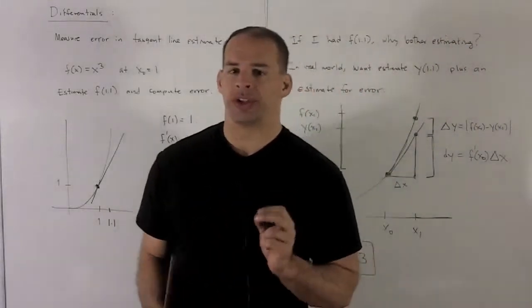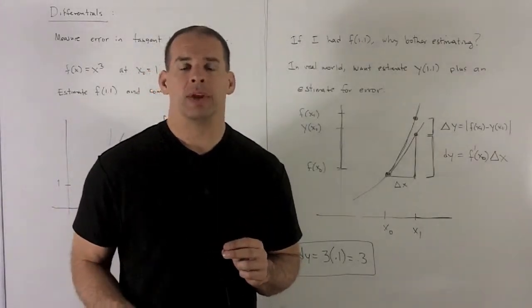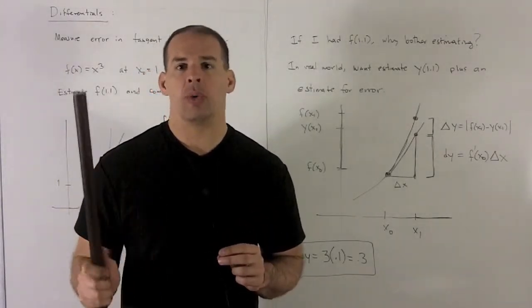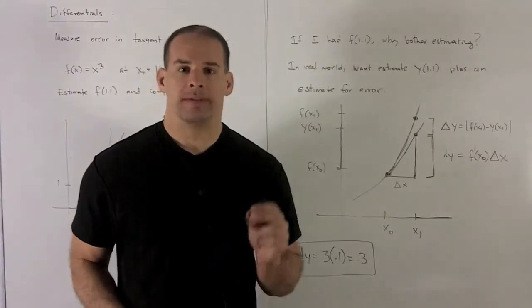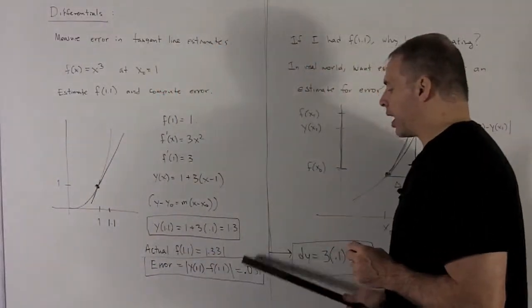So here's a situation in the real world. You have your tangent line, you have your function, you have no way of figuring out what the actual value is. So how would you go about estimating this error?